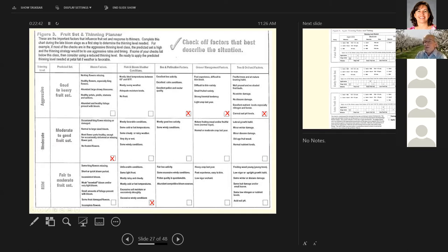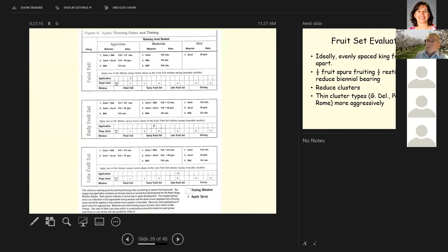If that's what's out in the orchard, if we've got a fair to moderate fruit set, you've got some king flowers missing, short or quick bloom period, inconsistent bloom, weak snowball bloom, and or very light bloom, small amounts of foliage present with bloom, some frost damage flowers, you click this box. And so you go through all of these factors and this gives you an idea where you lie as far as what sort of thinning you want to do. So this is one chart that will help you narrow your thinning things down.